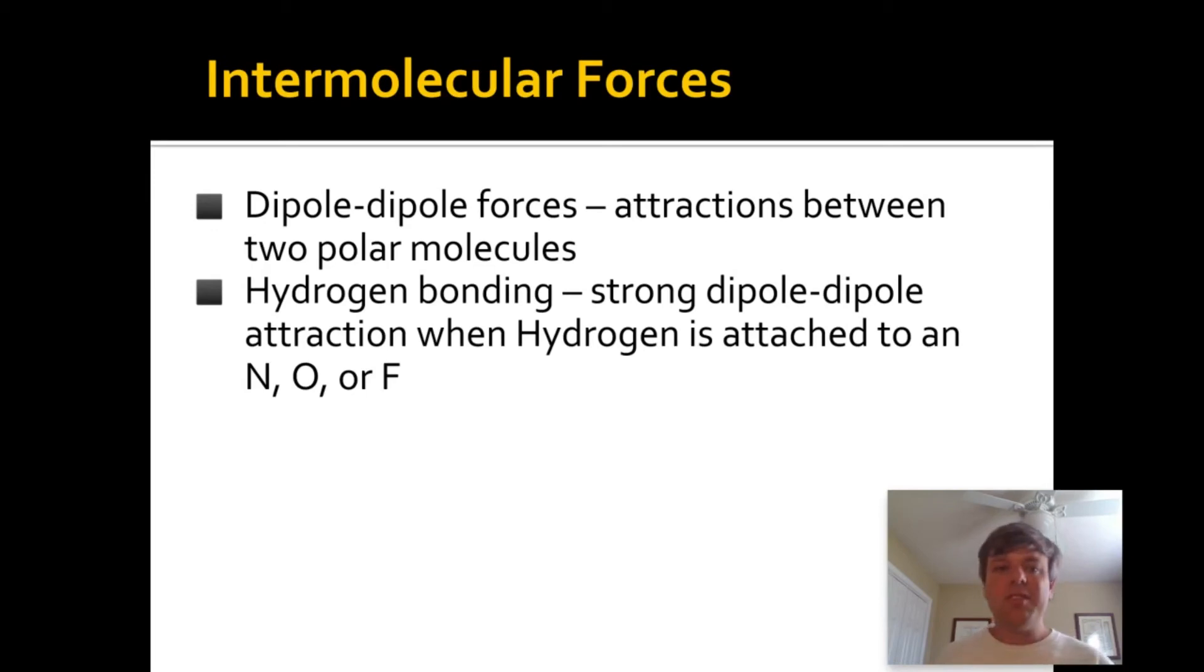Then there is an extreme version of this called hydrogen bonding, which is a very strong dipole-dipole attraction that occurs when hydrogen is attached to a nitrogen, oxygen, or fluorine. It's called hydrogen bonding because it involves a hydrogen, and it's a very strong attraction. And hydrogen bonding most prominently occurs in water molecules, where the hydrogen is attached to an oxygen. It can also occur in the NH3 molecule, which is also known as ammonia, where the hydrogen is attached to a nitrogen. It can also occur in, for instance, the HF molecule, the hydrogen fluoride molecule.